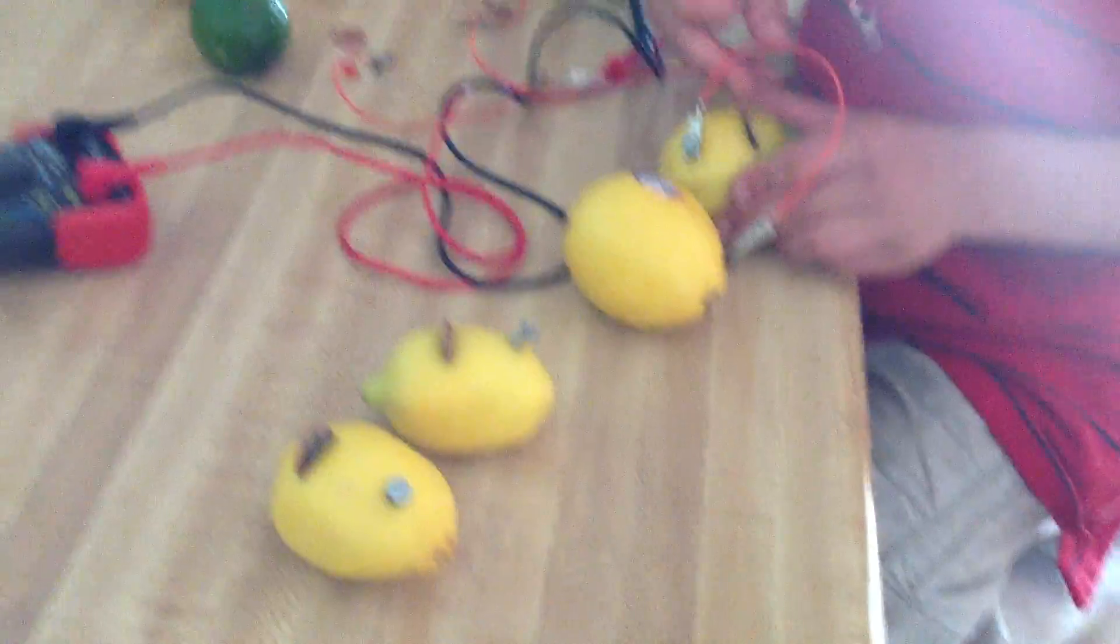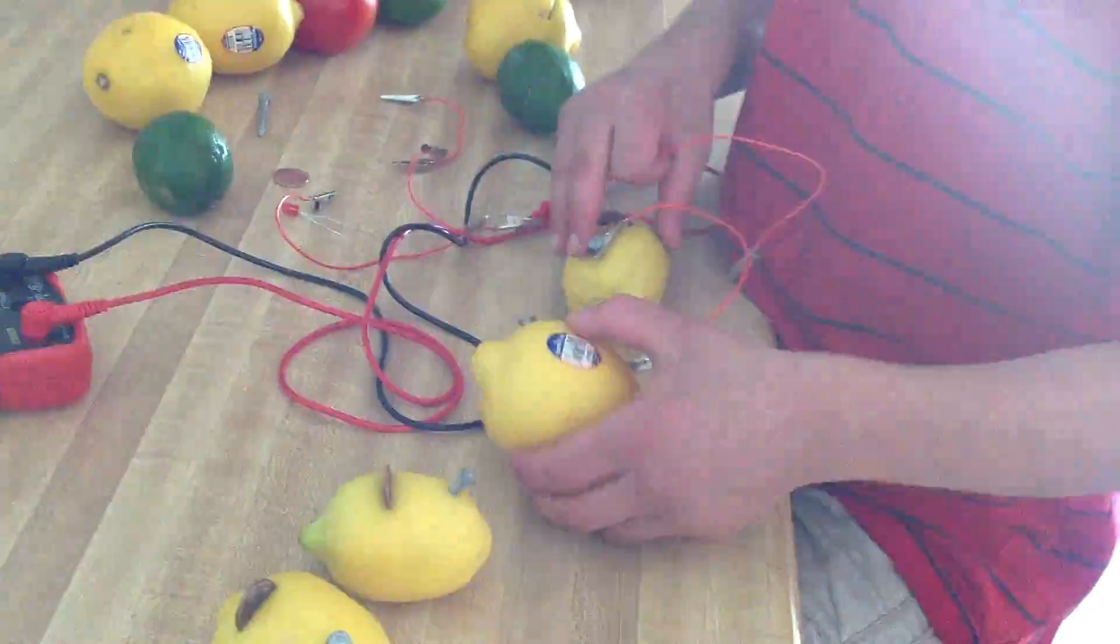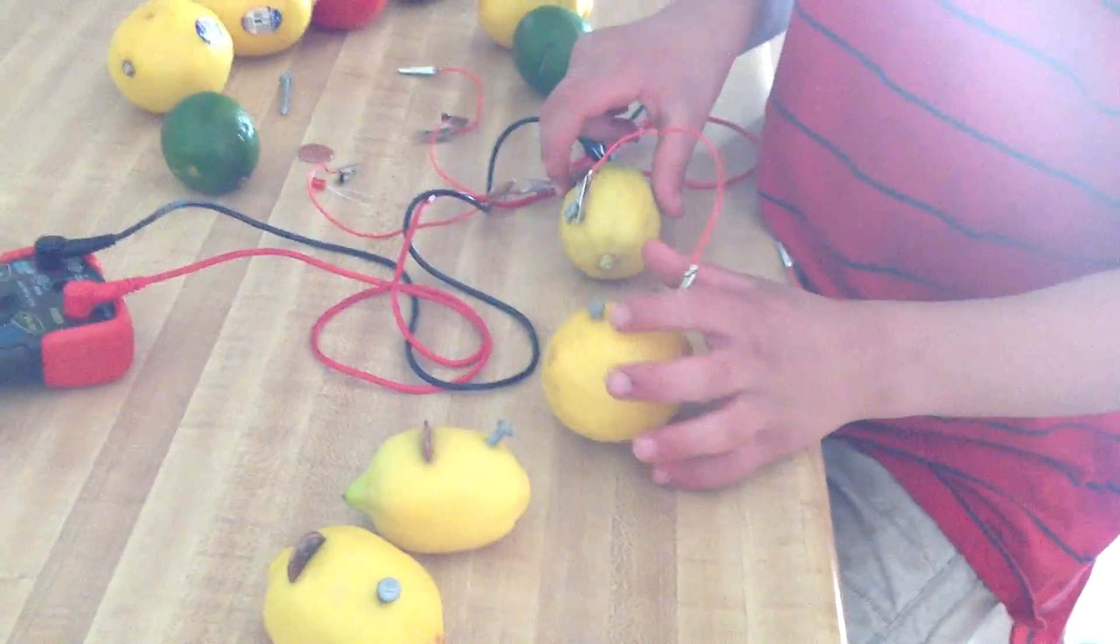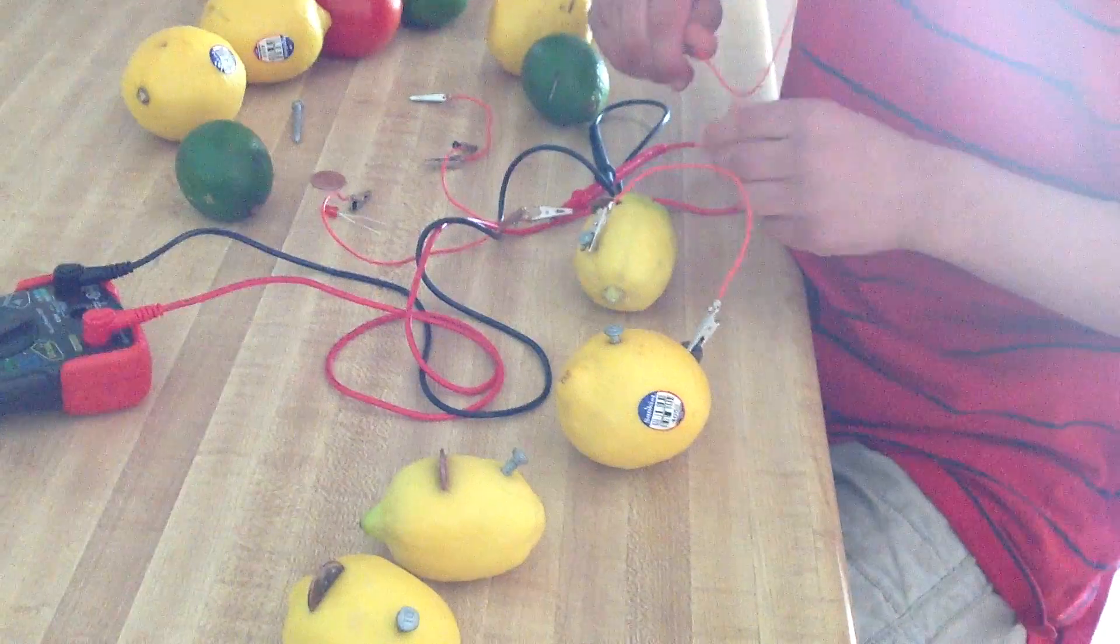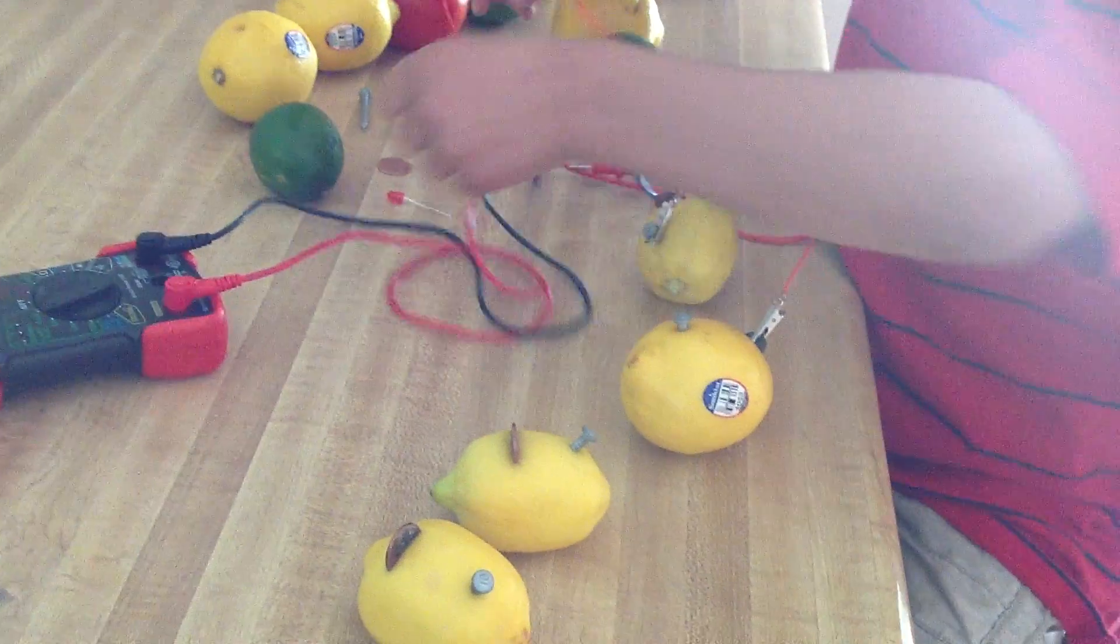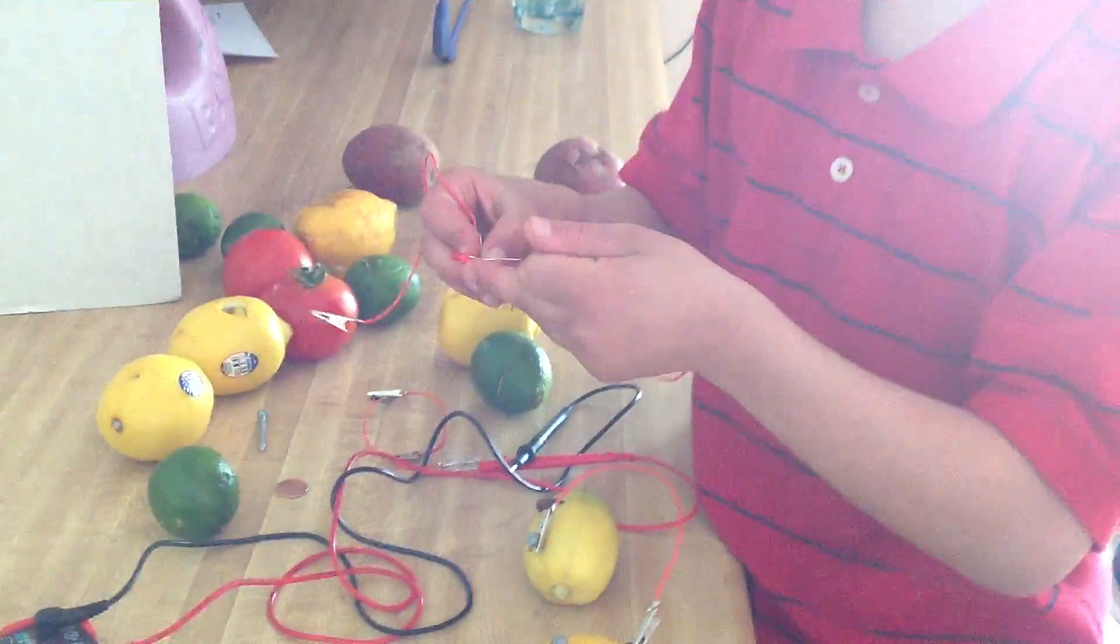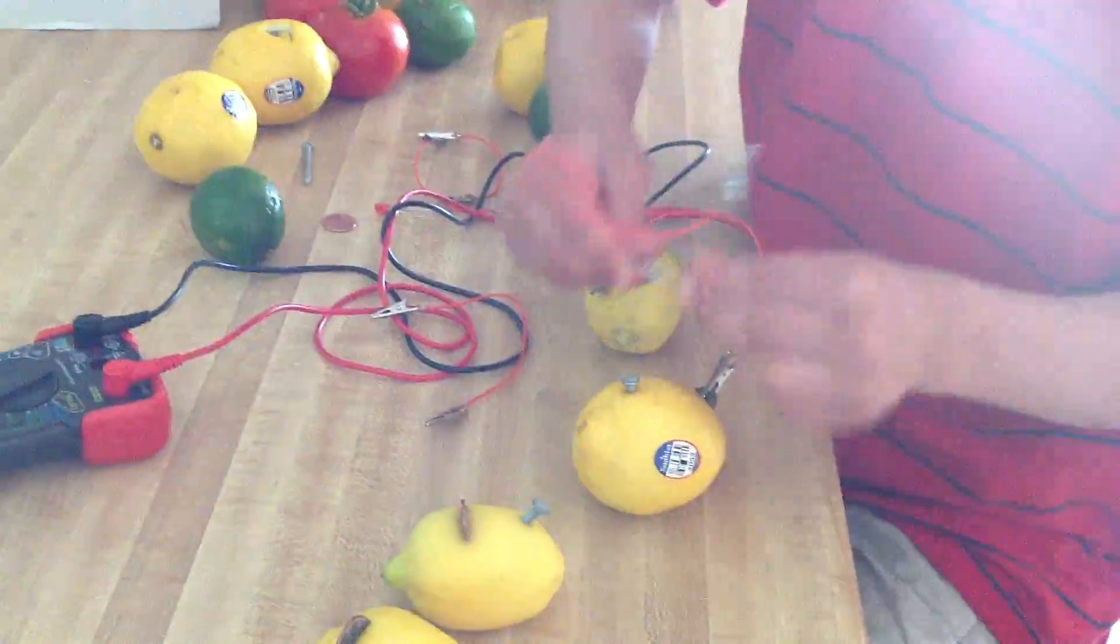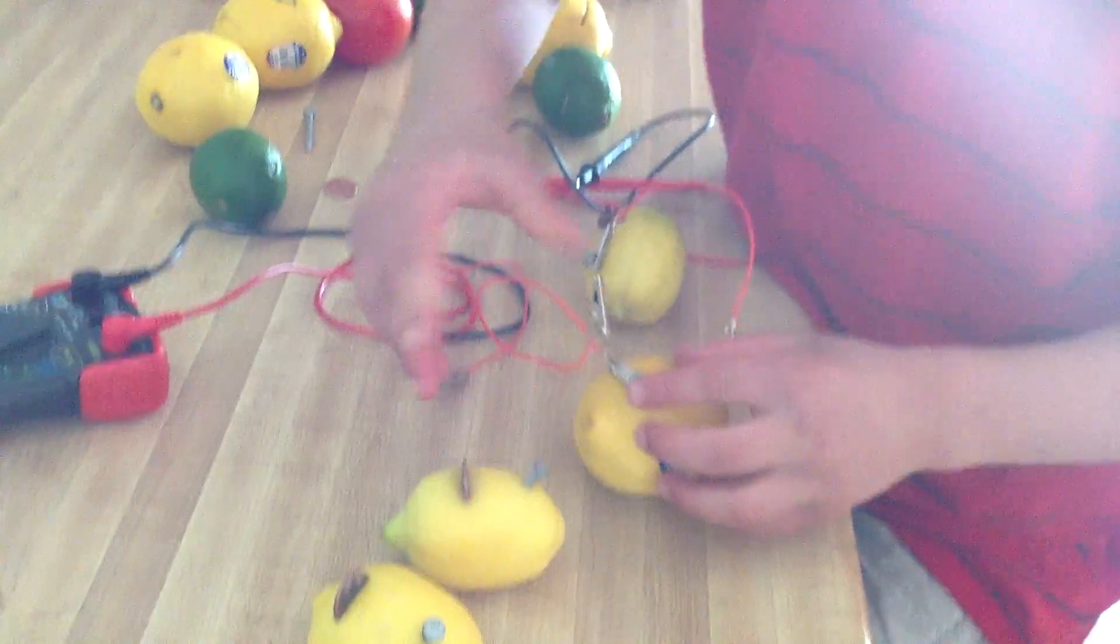Now, connect zinc to copper. But on this side, at the end of each lemon, at the end of the lemon path, you have to leave this copper penny and this zinc nail enough for lighting the LED. Because if you don't, if you're connecting only the lemons and not the LED, how will you glow this? So, leave the copper penny and the zinc nail. But all the others connect the copper to zinc.